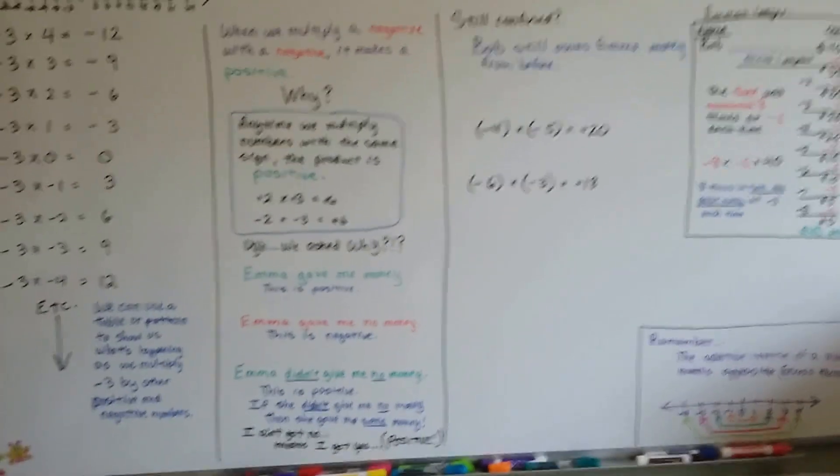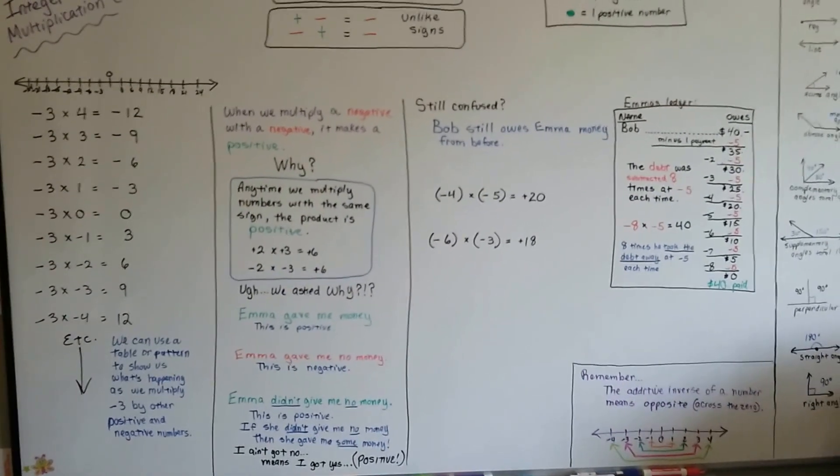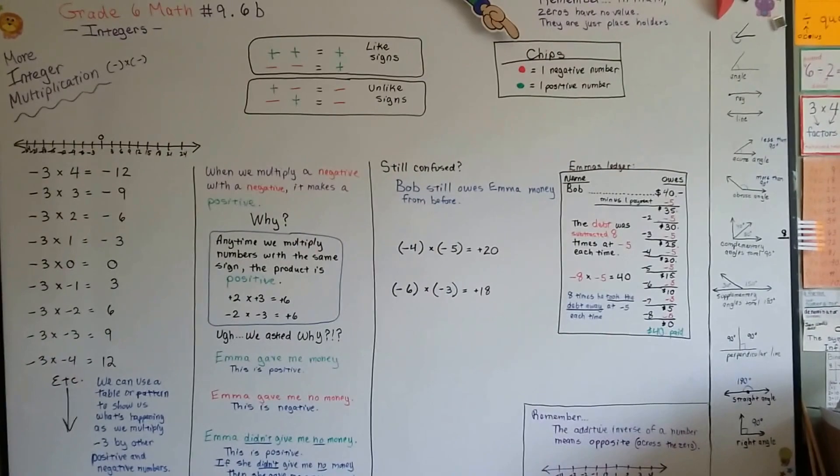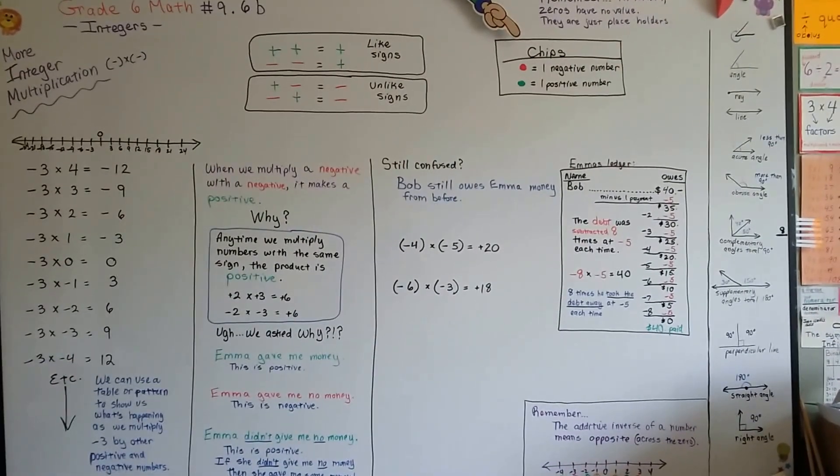If I don't have no pi, then that means I have some pi. Okay? Right? All right. We're going to keep talking about multiplying integers. I'll see you in the next video. Bye.